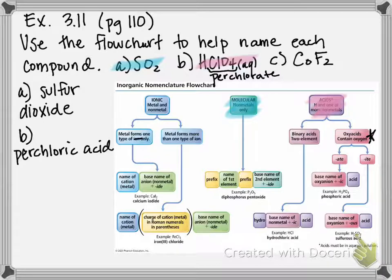And then last but not least we have CoF2. So hopefully you recognize that cobalt is a metal, it's a transition metal. And fluorine is a non-metal. So therefore we're going to name this as an ionic compound.